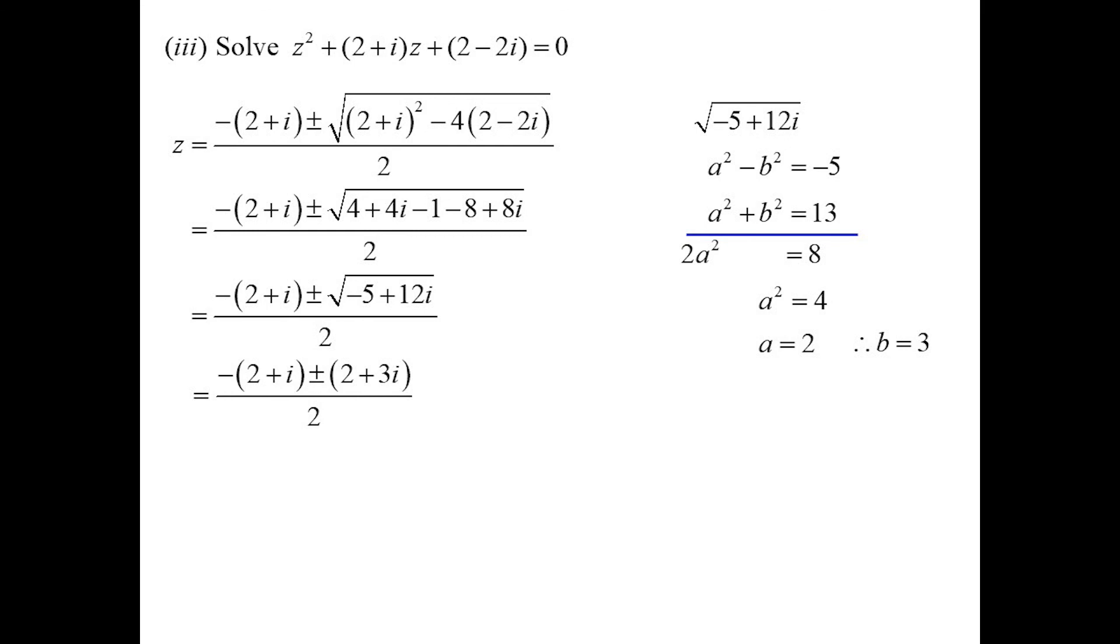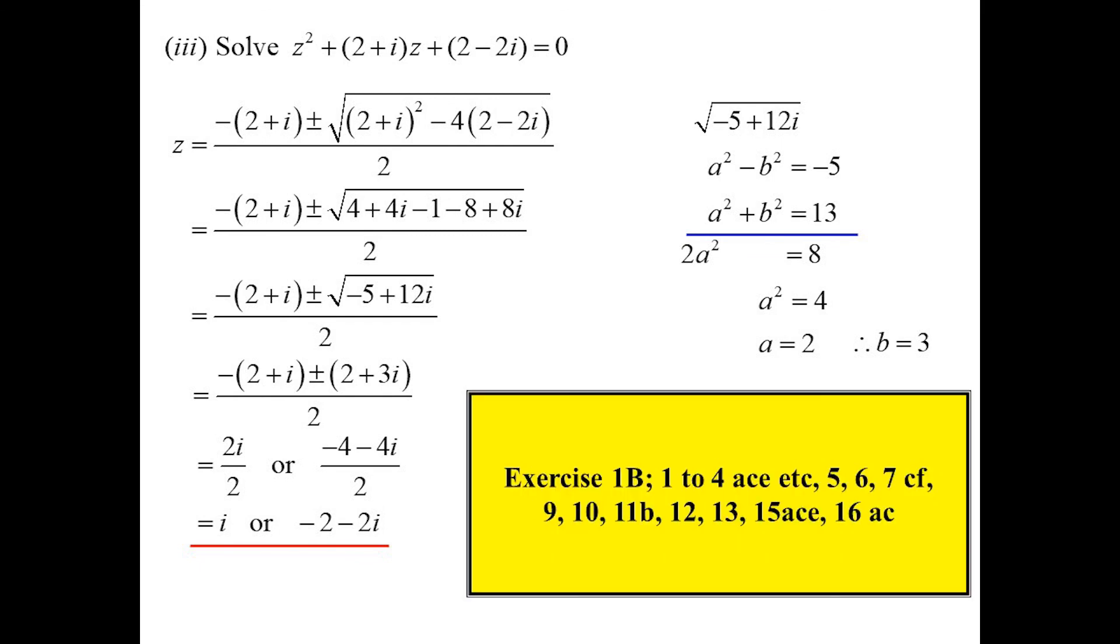And when you look at these solutions, oh, how silly was I using the quadratic formula? Because I should have just said, what multiplies together to give 2 minus 2i, what adds together to get 2 plus i? 1 and minus 2 minus 2i. There you go. Okay. Now we're having some fun.